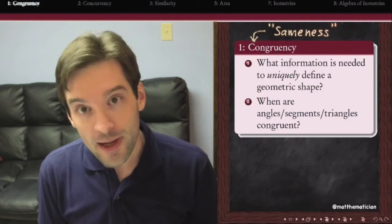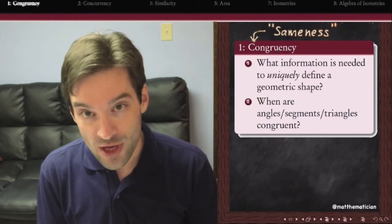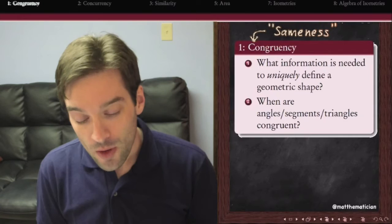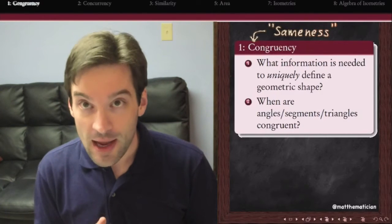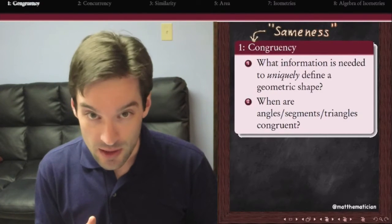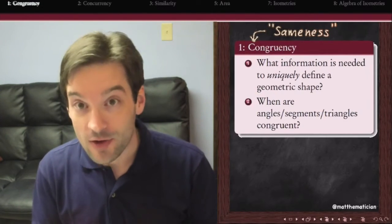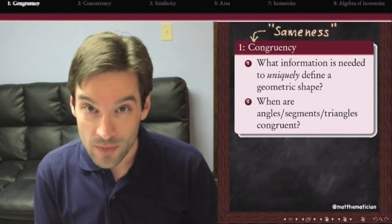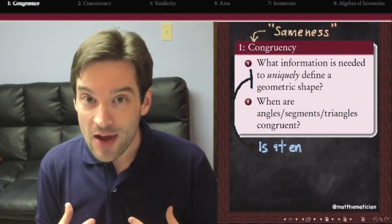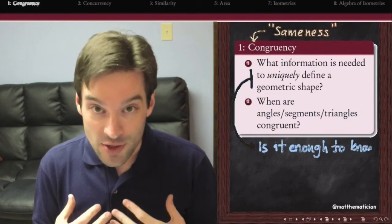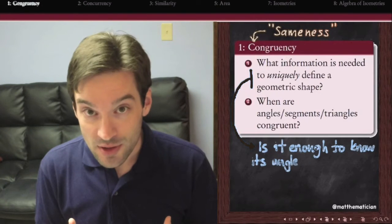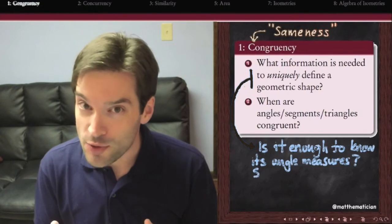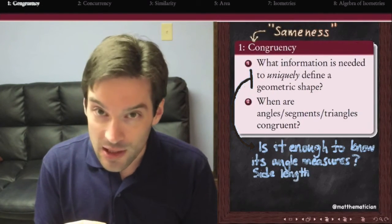We're going to ask two important questions in this chapter. First of all, what type of information and how much do we need in order to uniquely characterize a geometric shape? For example, in order to know everything about a geometric object, should I know all of its angle measurements? Should I know just some of them — can I get away with that?